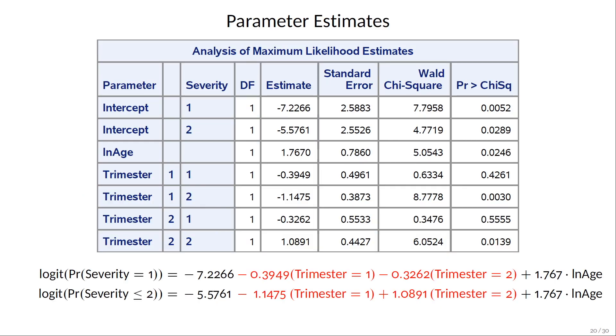Log age only has one parameter shared between the response functions, so it has only one row. And when you write the model, the log age parameter is 1.767 in both response functions. But trimester has two sets of parameters, as indicated by the severity column.